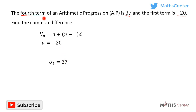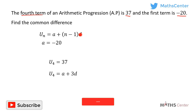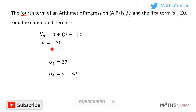We can find U4 from the formula. U4 will be equal to A plus, with N now being 4, so 4 minus 1 times D. Since 4 minus 1 is 3, U4 will be equal to A plus 3D.